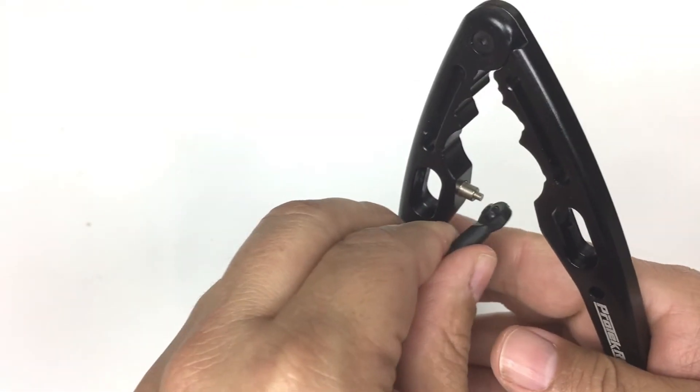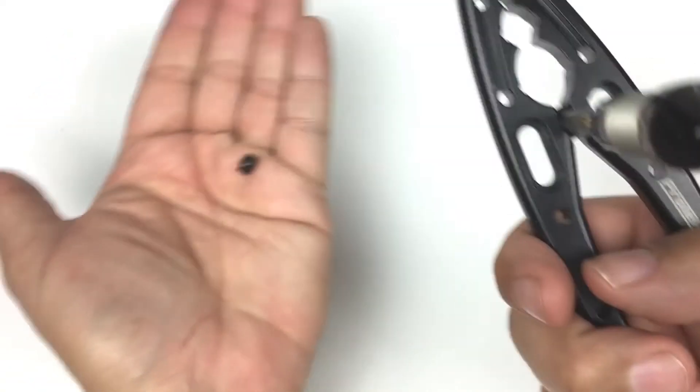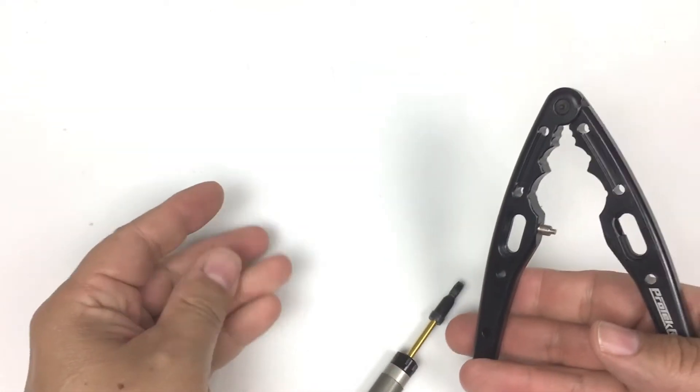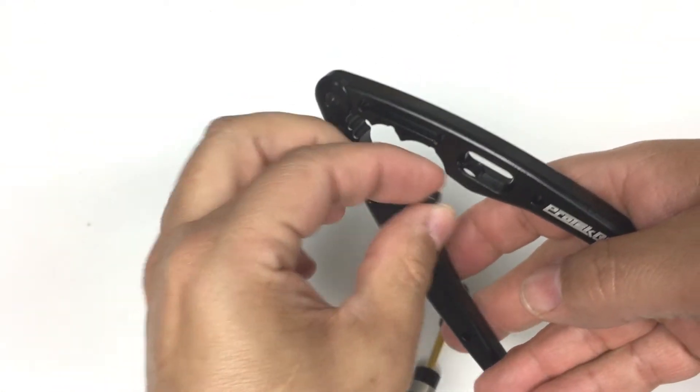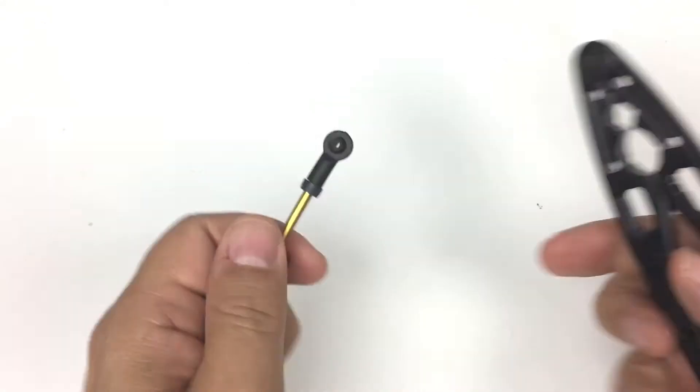So with this tool, the rod end goes right on there. And when you squeeze, it pops the rod end ball right out. You can also use it to install the ball. That goes there. And you squeeze that guy in, and it's installed. No fuss, no muss.